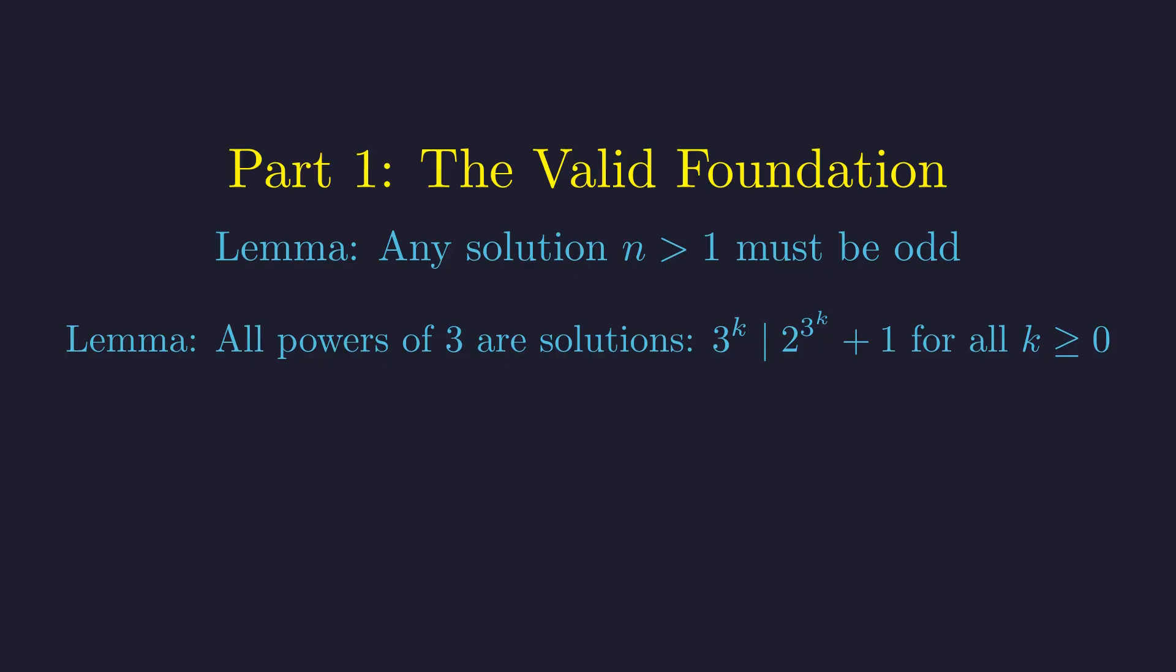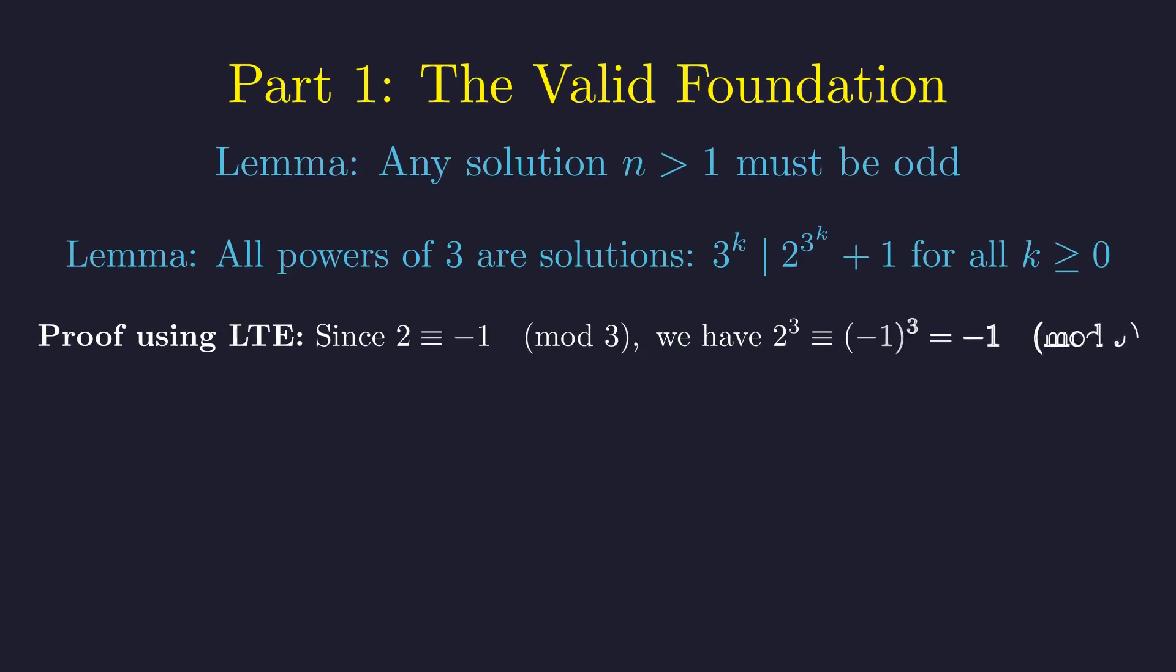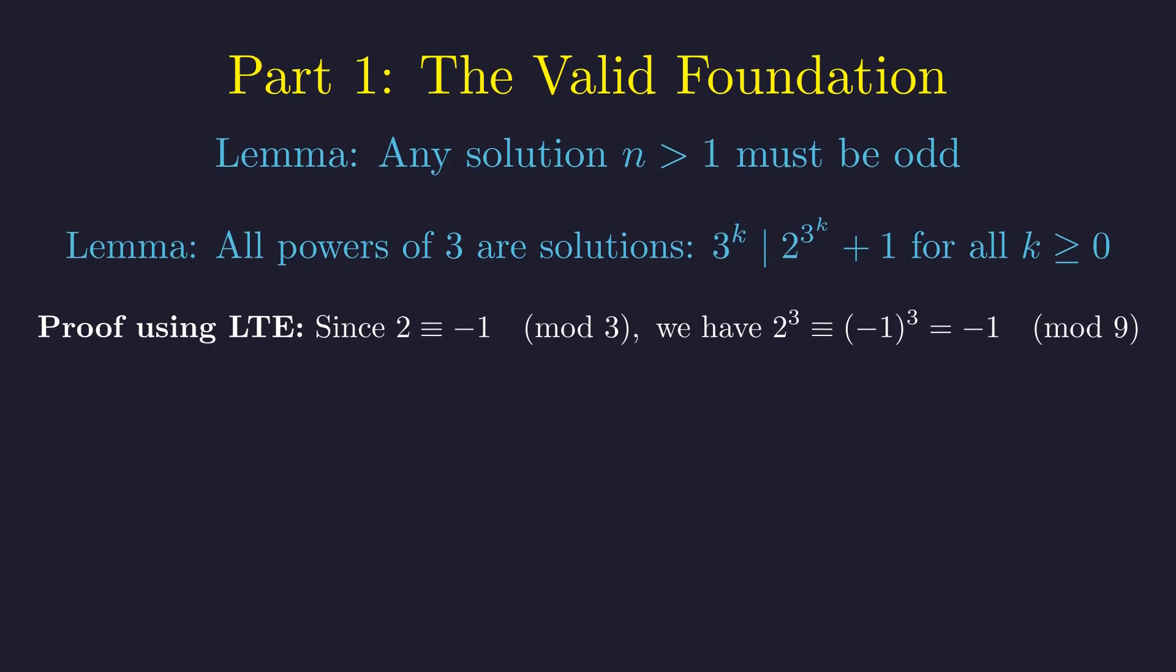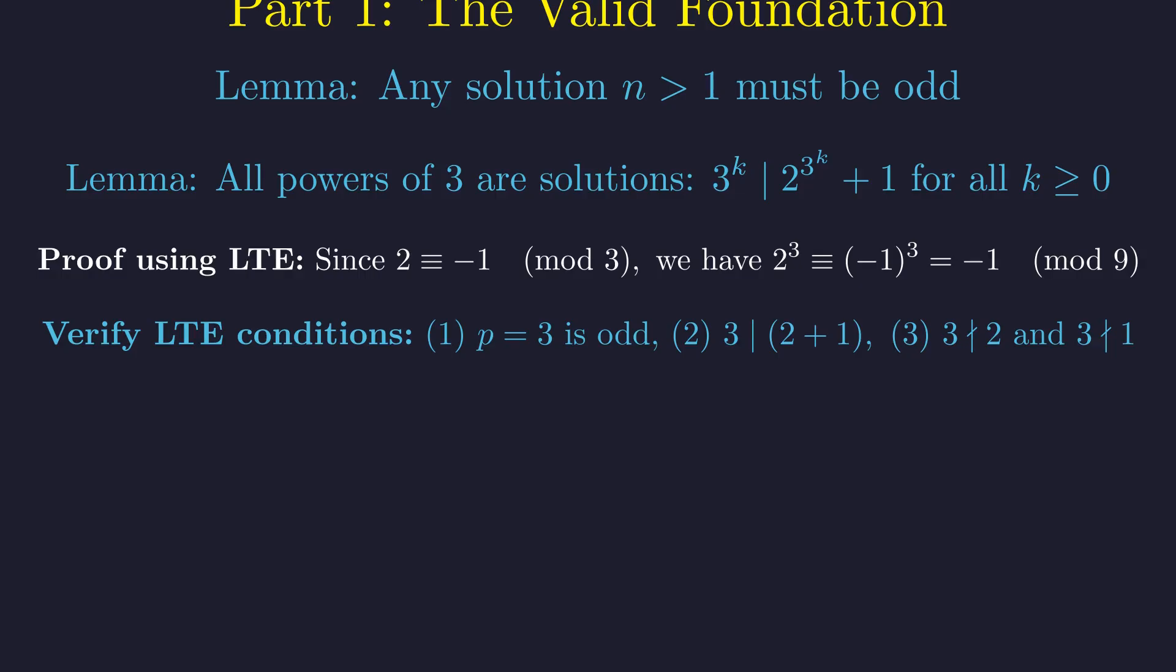Second, all powers of 3 are solutions. We'll prove this using the lifting the exponent lemma. Since 2 is congruent to negative 1 modulo 3, we can compute that 2 cubed is congruent to negative 1 modulo 9. Before applying the lifting the exponent lemma, we must rigorously verify its conditions. First, our prime p equals 3 is odd. Second, 3 divides the sum 2 plus 1. Third, 3 does not divide 2 or 1. With these conditions satisfied, we can proceed.